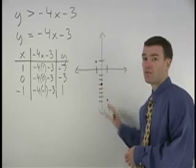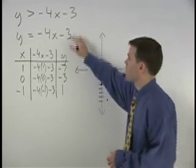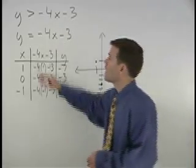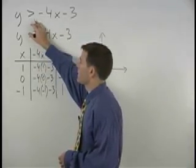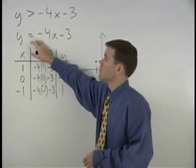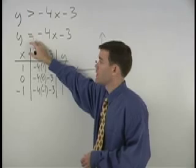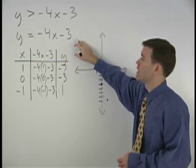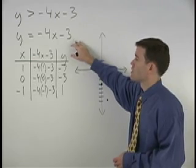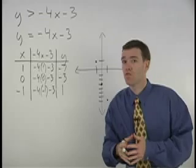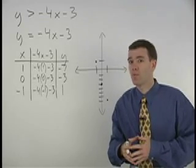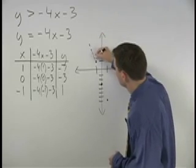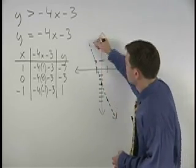Before graphing a line through these points, however, let's take a look back at the original inequality. Notice that y is greater than negative 4x minus 3. It is not equal to negative 4x minus 3. So the line y equals negative 4x minus 3 is not a part of the solution set. However, it does form a boundary on the graph. So to represent this idea, we draw a dotted line through our points.